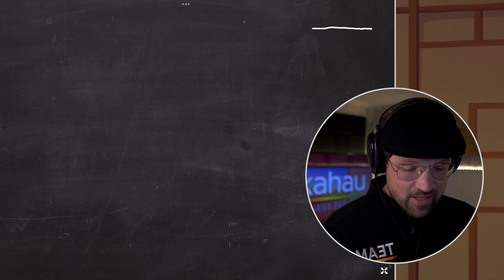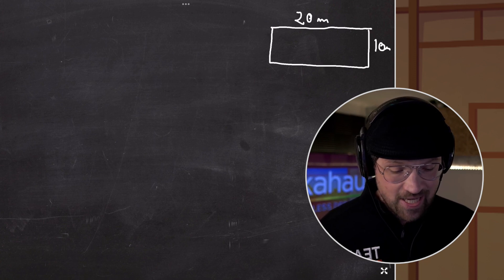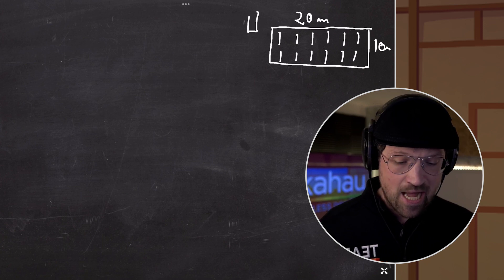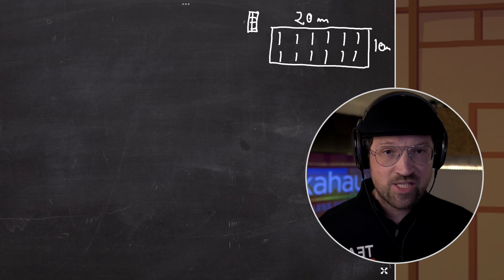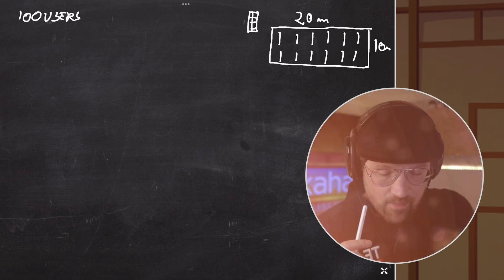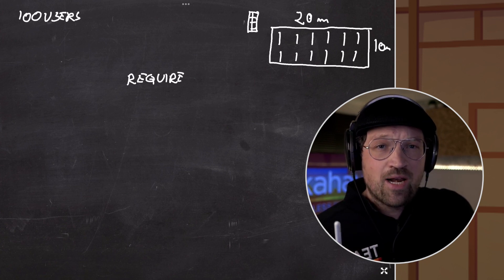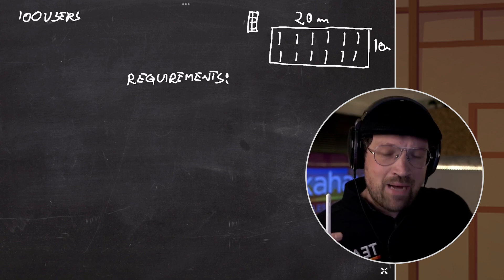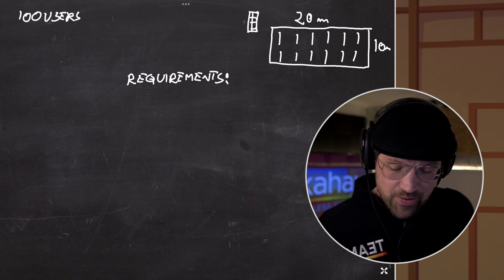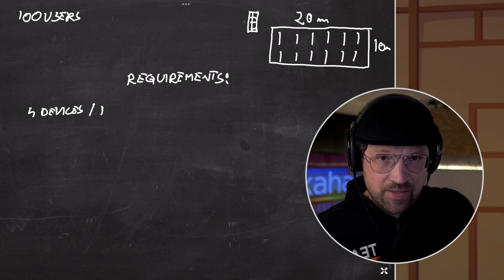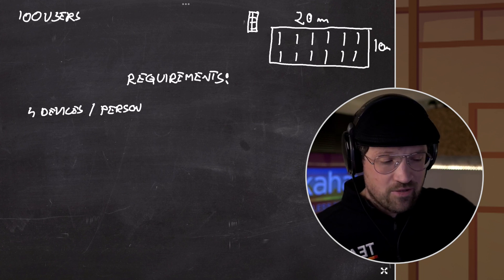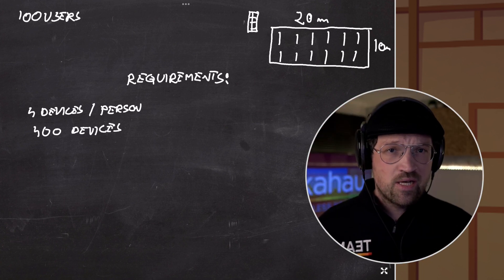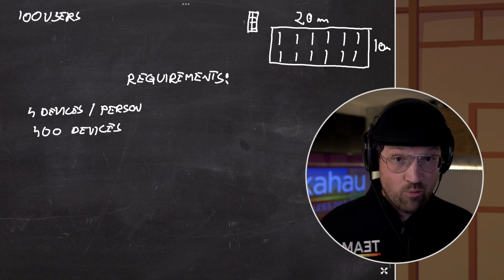Let's take a look. We have a 20 by 10 meter office with 12 desks, eight people on each desk, which translates to roughly 100 users. You start capturing requirements, asking clients about number of devices and what they're going to do with them. They come back saying they will have four devices per person — a staggering 400 devices. Then you ask what applications they'll use: email, voice, video, printing, audio streaming, and video streaming.